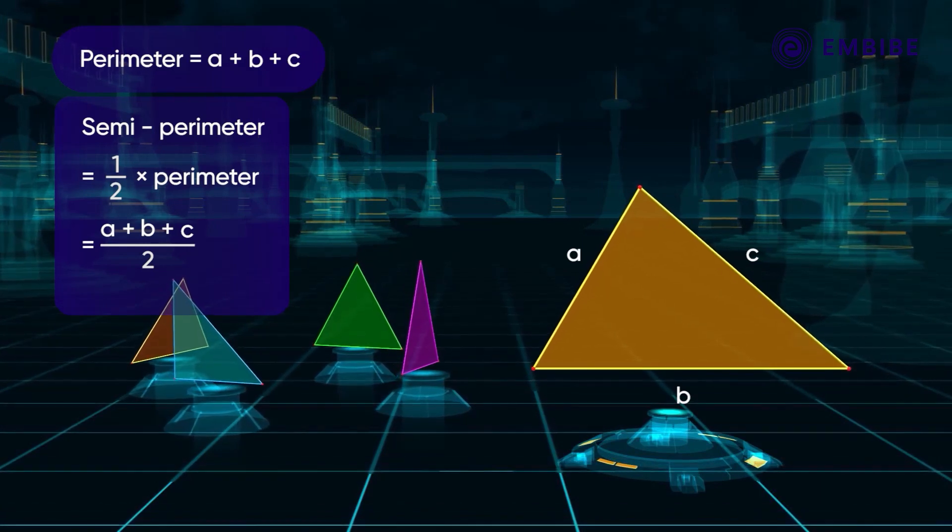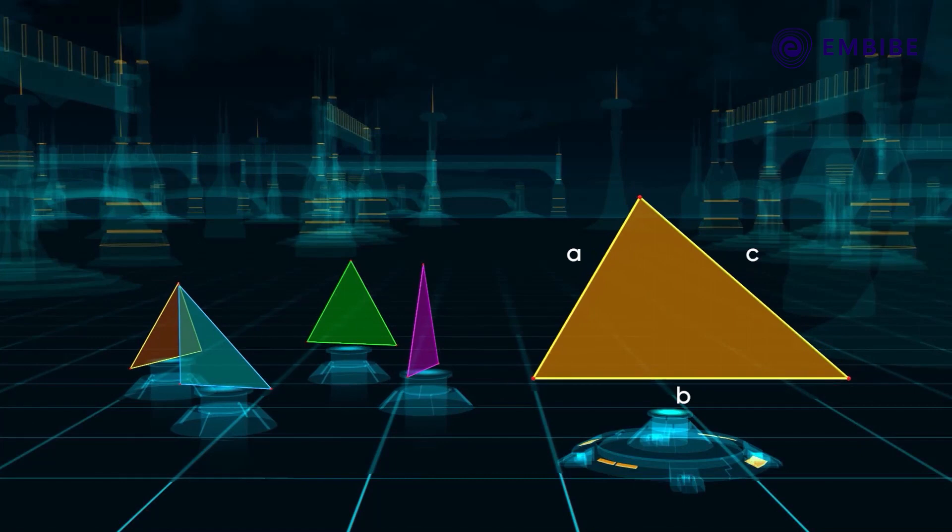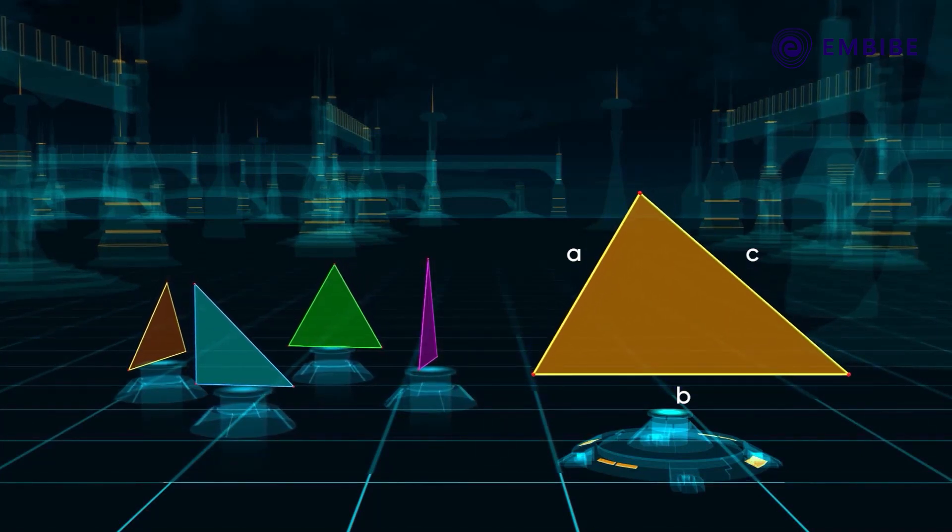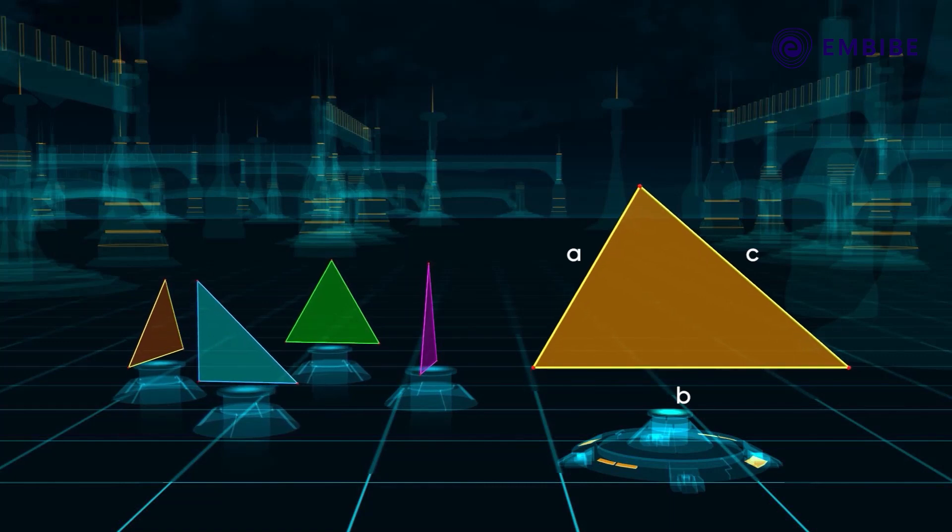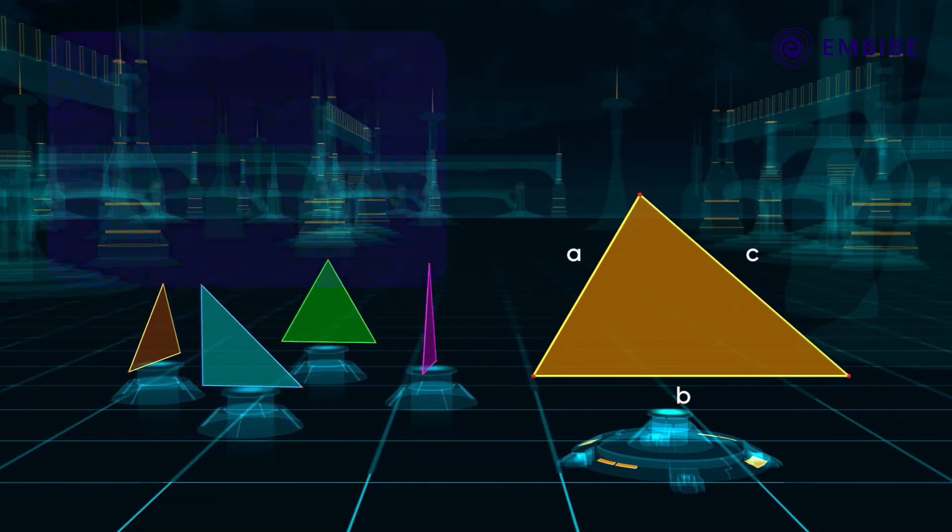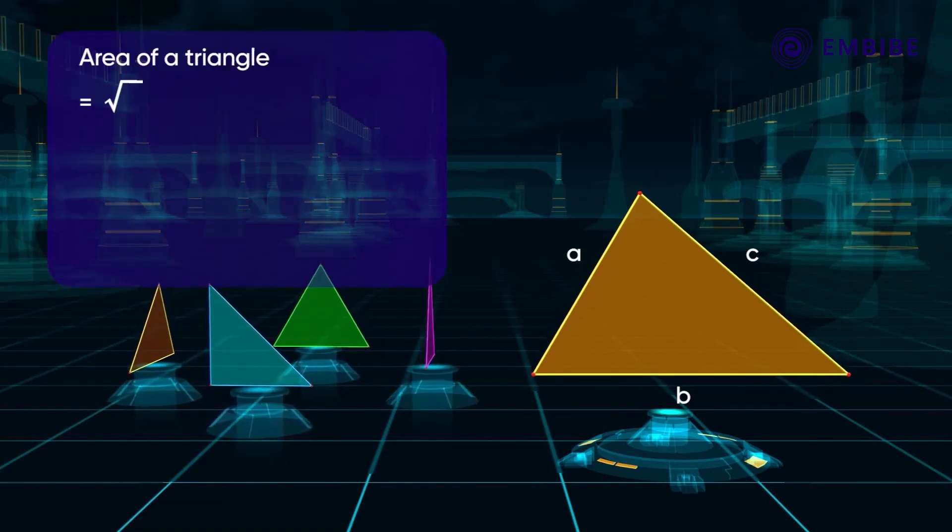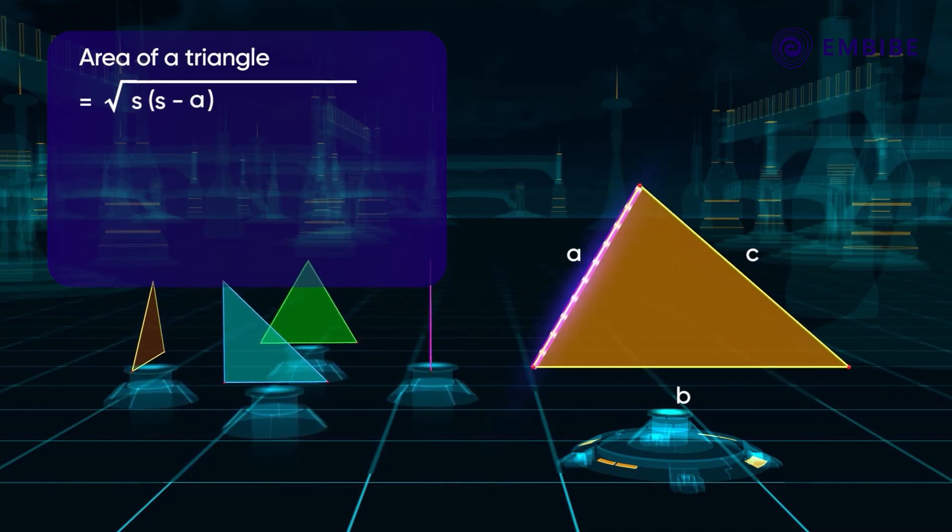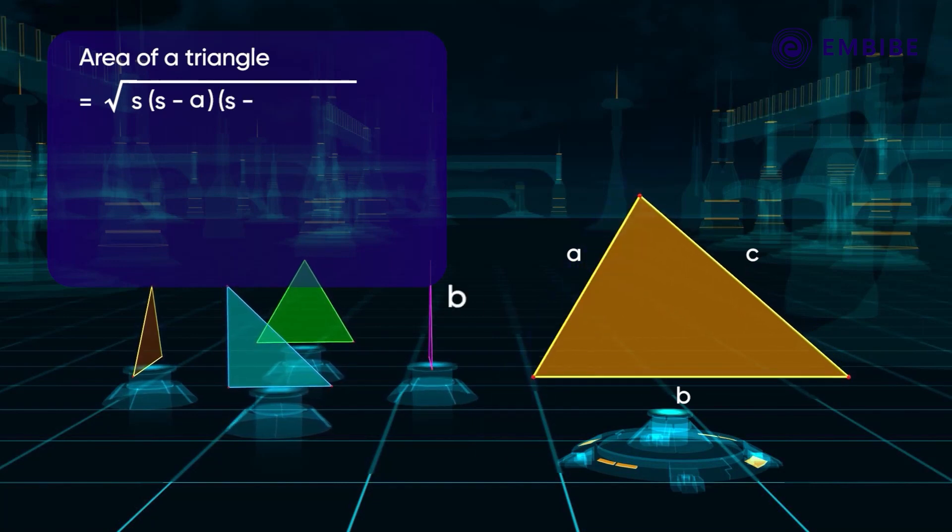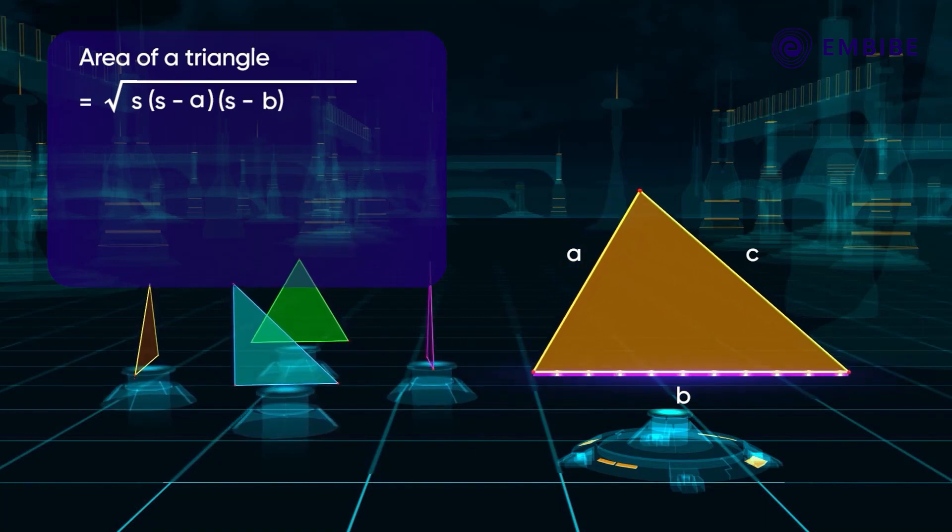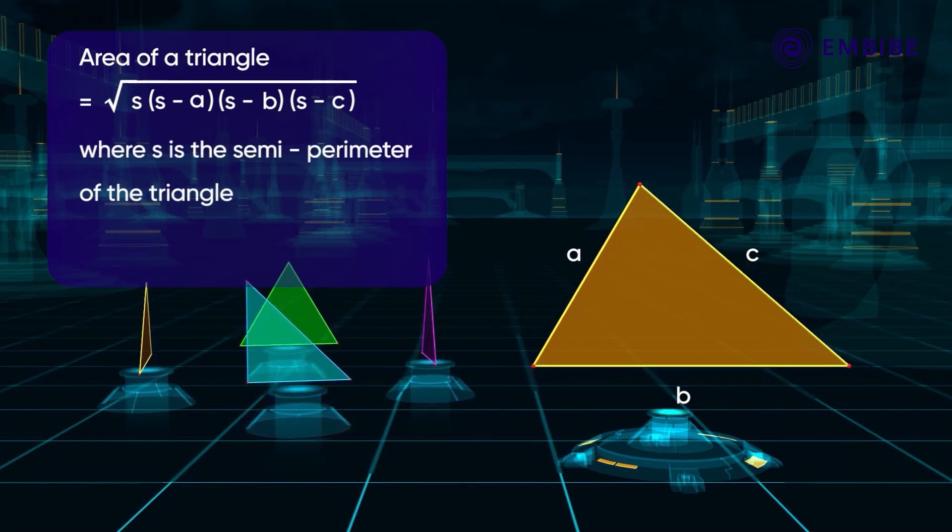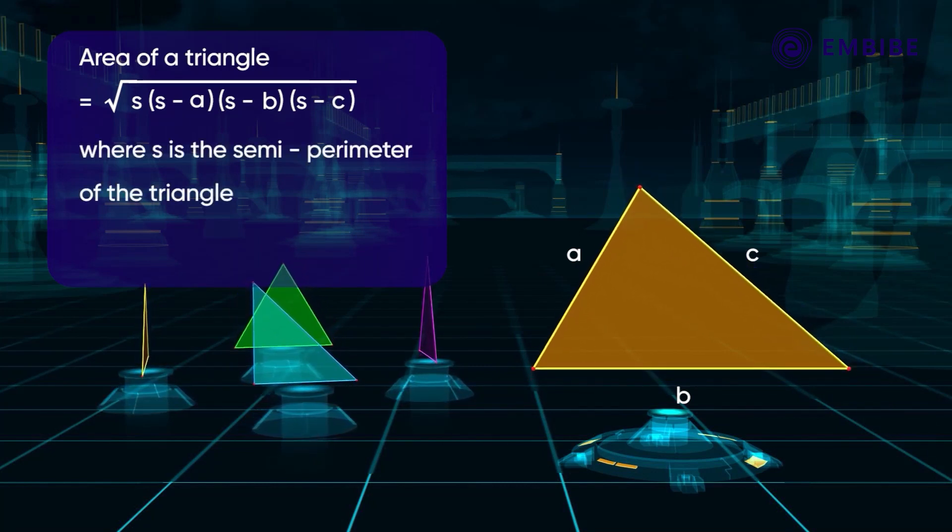It states that if a triangle has sides of length A, B, and C, then its area is given by the formula: area of a triangle is equal to under root of S into S minus A into S minus B into S minus C.